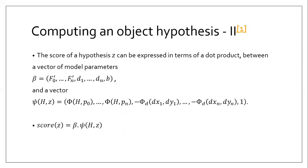The score of a hypothesis z can be expressed as a dot product of beta and psi: a vector of model parameters beta and feature vector psi. Beta consists of root filter coefficients, deformation cost coefficients for n parts, and a bias term. Psi is a function consisting of the feature vectors and the displacements of the different parts relative to their anchor positions.